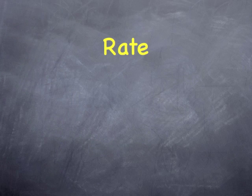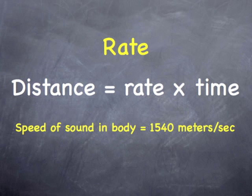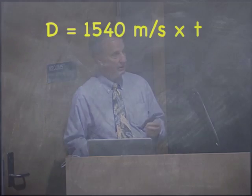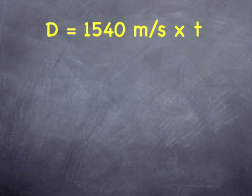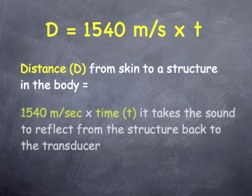Ultrasound is based upon a very simple algebraic equation: distance equals rate times time. The speed of sound in the human body is fixed at 1,540 meters per second in every single ultrasound machine. So we know the rate. All we have to do is calculate the time, and we can determine the distance — specifically, the distance from the skin to a structure in the body.